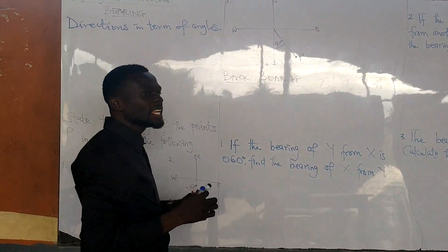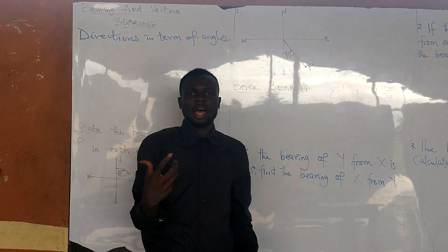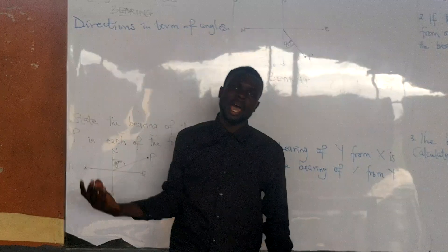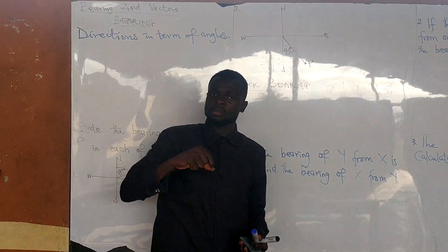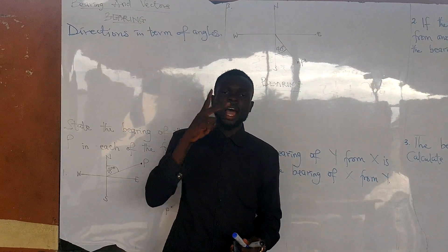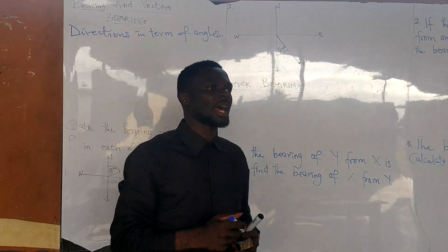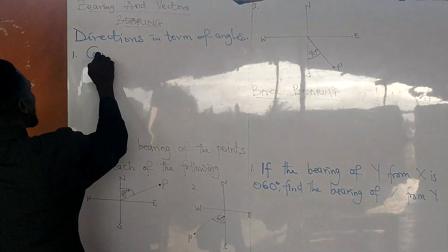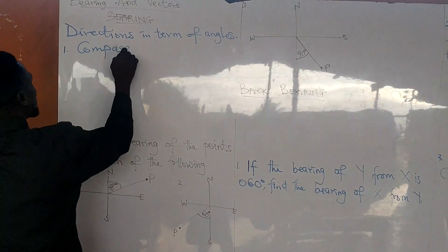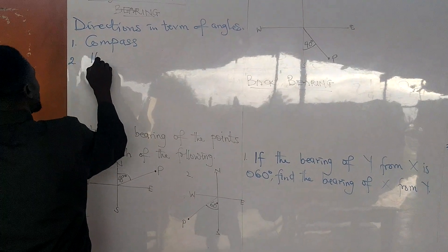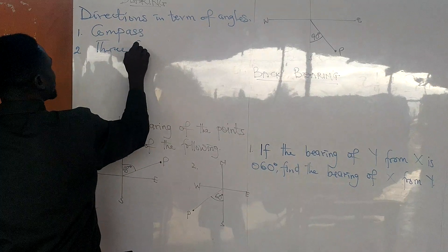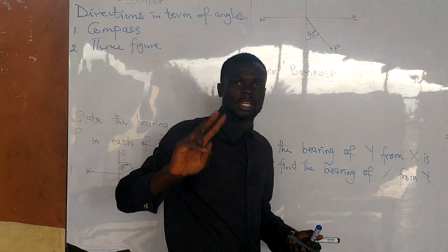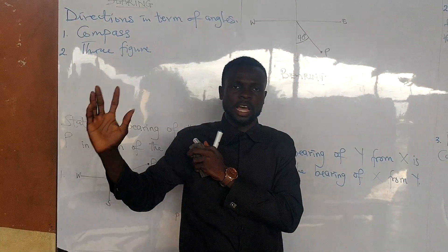Bearing gives you direction — either to the north, to the east, to the left, or to the right, or whatever it is — but it is in terms of angle. And we have only two kinds of bearings: we have the compass bearing, and we have the three-figure bearing. These are the two kinds of bearing: the compass bearing and the three-figure bearing.